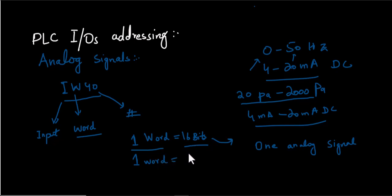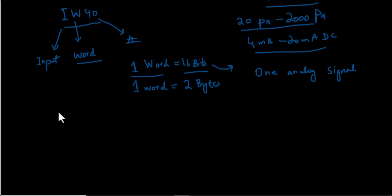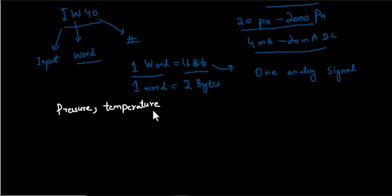Suppose I interface two analog sensors to my PLC: one is a pressure sensor and another is a temperature sensor. The address of the analog input channel interfacing the pressure sensor is, for example, IW 40.